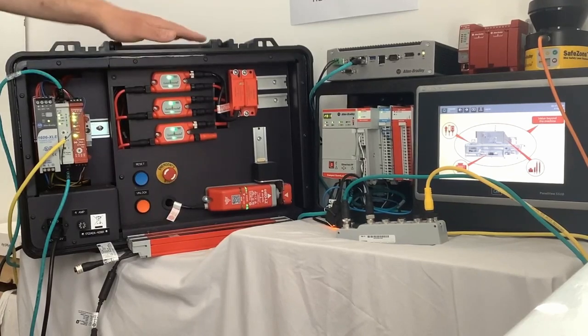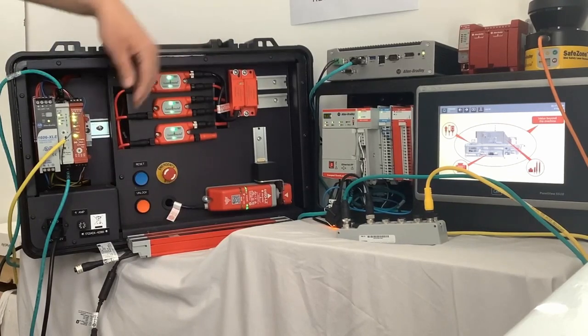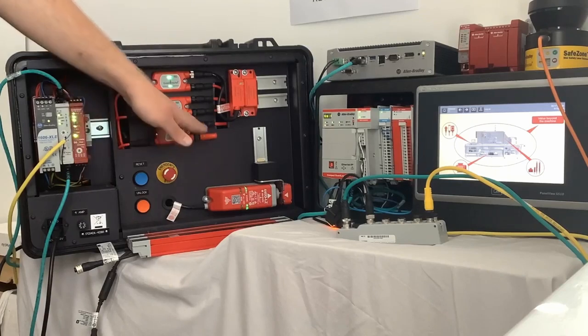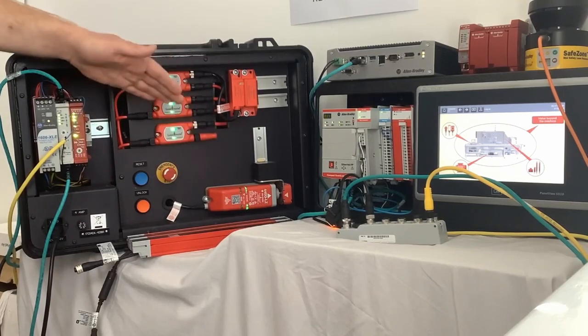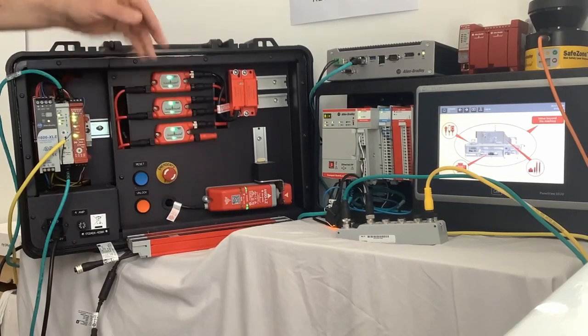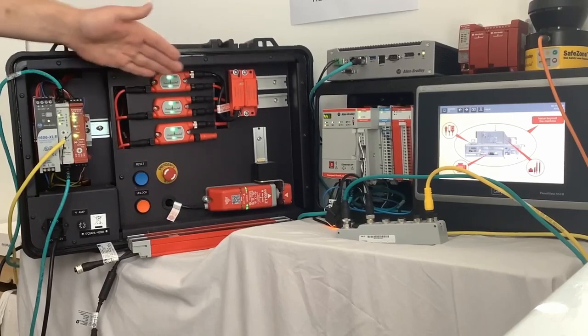Also, if you need to extend this in the future, simply turn the GuardLink relay off, remove the terminating resistor, then add on the new device, repower. That then becomes the next tap in the address. Obviously going up to a maximum of 32 on one network run.